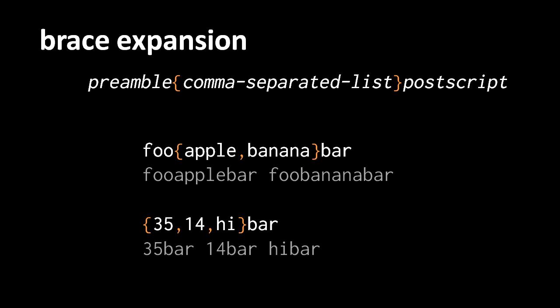Another example: '{35,14,hi}bar' has no preamble, so the preamble is implicitly an empty string. The result is three items: '35bar 14bar hibar'.